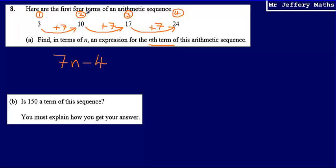7 multiplied by 2 is 14, take away 4, gives me 10. 7 multiplied by 3 gives me 21, take away 4, gives me 17. So yes, this is correct. My final answer for part A is going to be 7n minus 4.